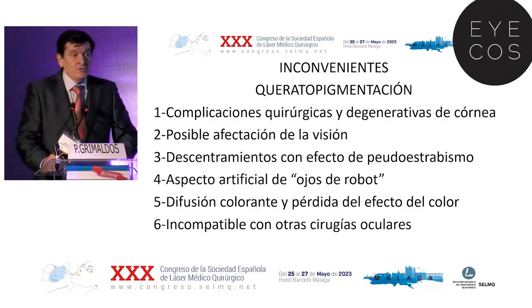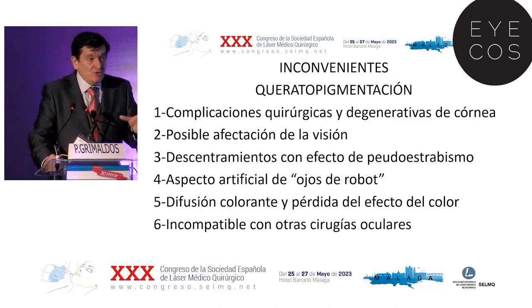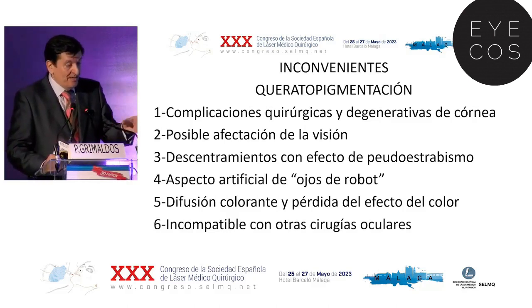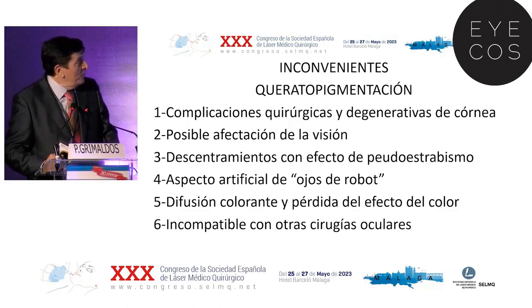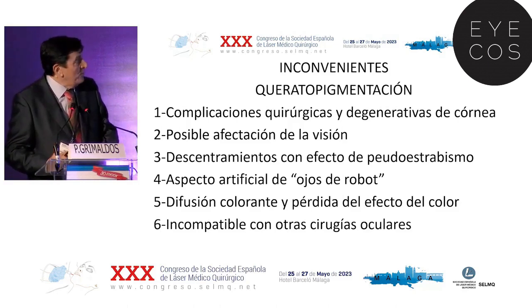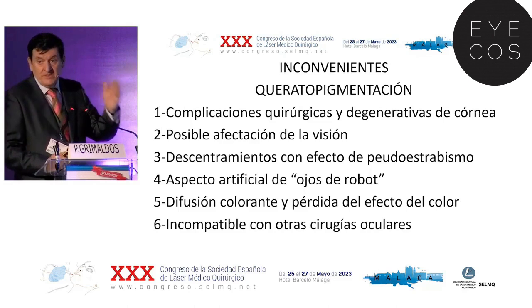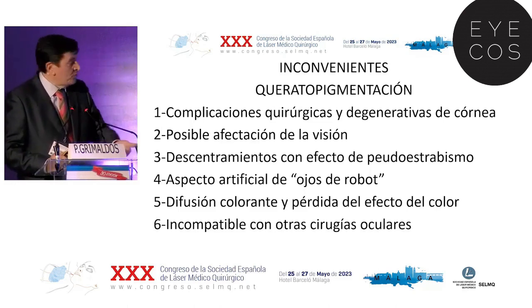Offsets can occur since we have to make the ring with a laser. The visual axis is one thing and the anatomical axis is another, and they often do not coincide. We can create an offset that gives an appearance of pseudostrabismus, because the dye is not well aligned in both eyes, giving the appearance of pseudostrabismus.